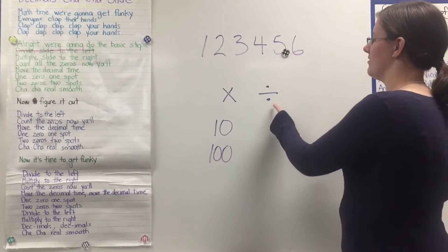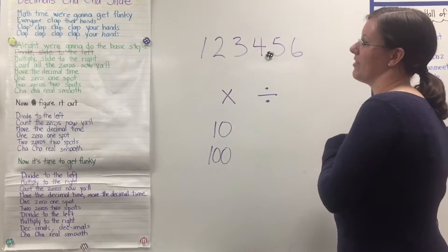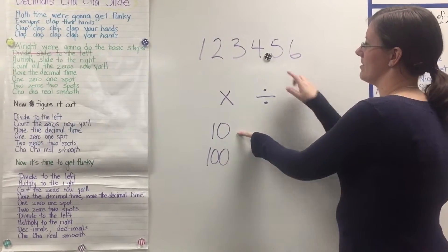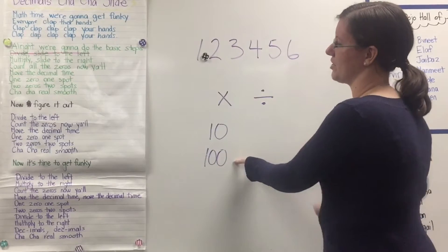I'll figure it out. Divide to the left. Count the zeros, y'all. Move the decimal time. One zero, one spot. Two zeros, two spots. Cha Cha real smooth.